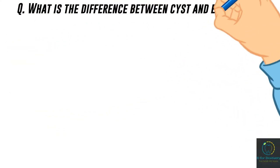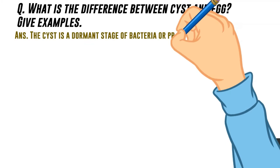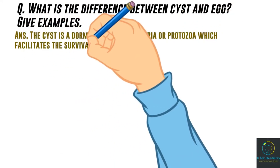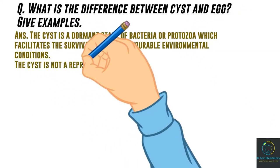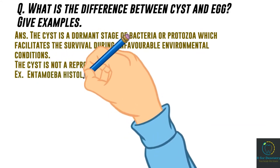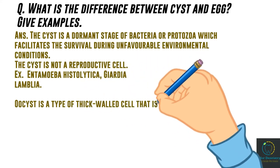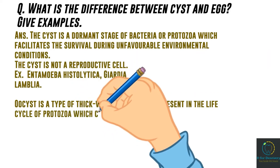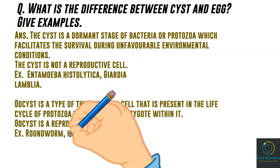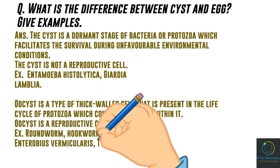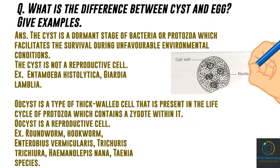What is the difference between cyst and egg? Give examples. A cyst is a dormant stage of bacteria or protozoa which facilitates survival during unfavorable environmental conditions. The cyst is not a reproductive cell — for example, cysts of Entamoeba histolytica, Giardia lamblia, etc. An oocyst is a type of thick-walled cell present in the life cycle of protozoa which contains a zygote within it. The oocyst is a reproductive cell — for example, oocysts of roundworm, hookworm, Enterobius vermicularis, Trichuris trichiura, Hymenolepis nana, and Taenia species.